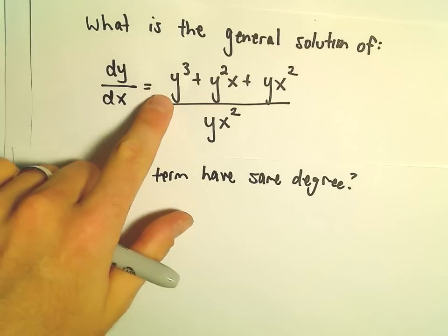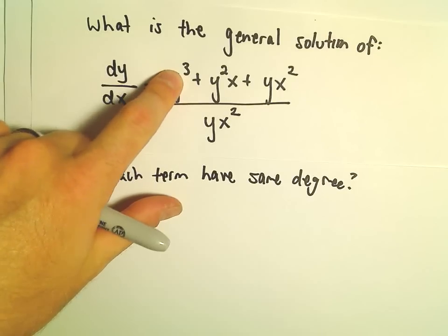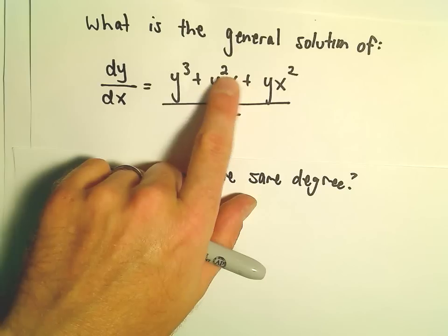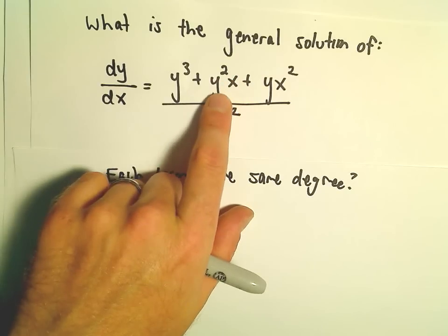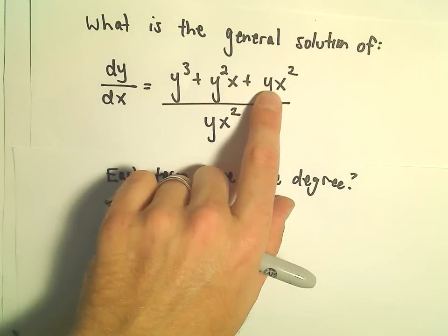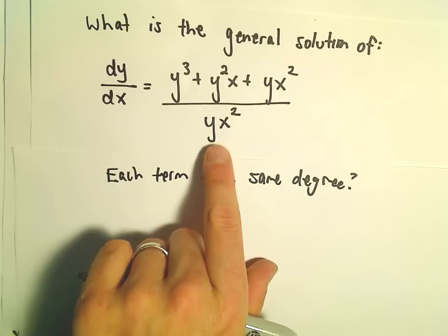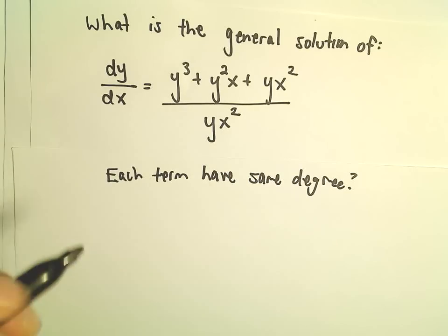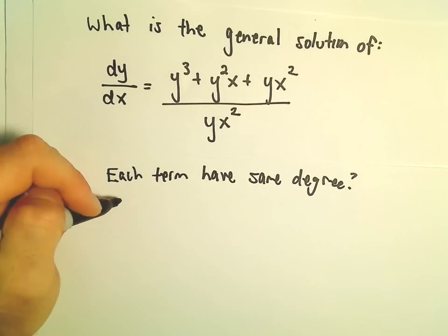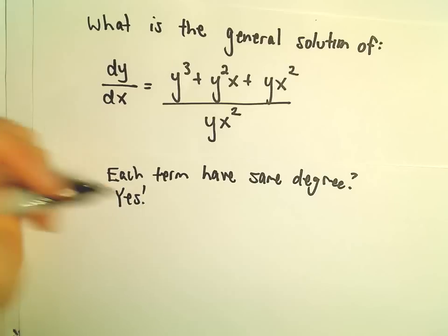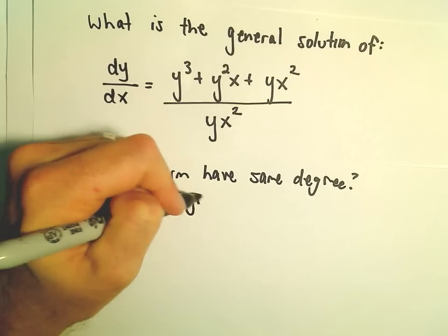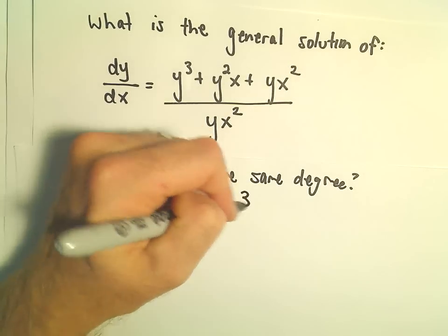In the numerator, we've got y to the third — that has degree three. We have y squared times x to the first; we add the exponents, so that also has degree three. Then we have y times x squared, also degree three. And again, y times x squared — that also has degree three. So yes, they all have the same degree. In this case, each term has a degree of three.